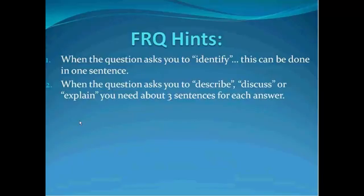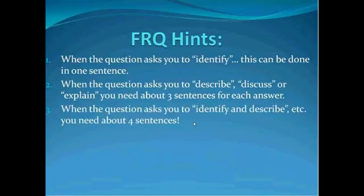Think in general — it might take three sentences, sometimes four or five, but maybe you can adequately describe something in two sentences. If you think you need three or four sentences, you're probably doing an explain, describe, or discuss answer. And if they ask you to identify and describe, you need one sentence for the identify and three or four for the describe — so you're up to four or five sentences total.